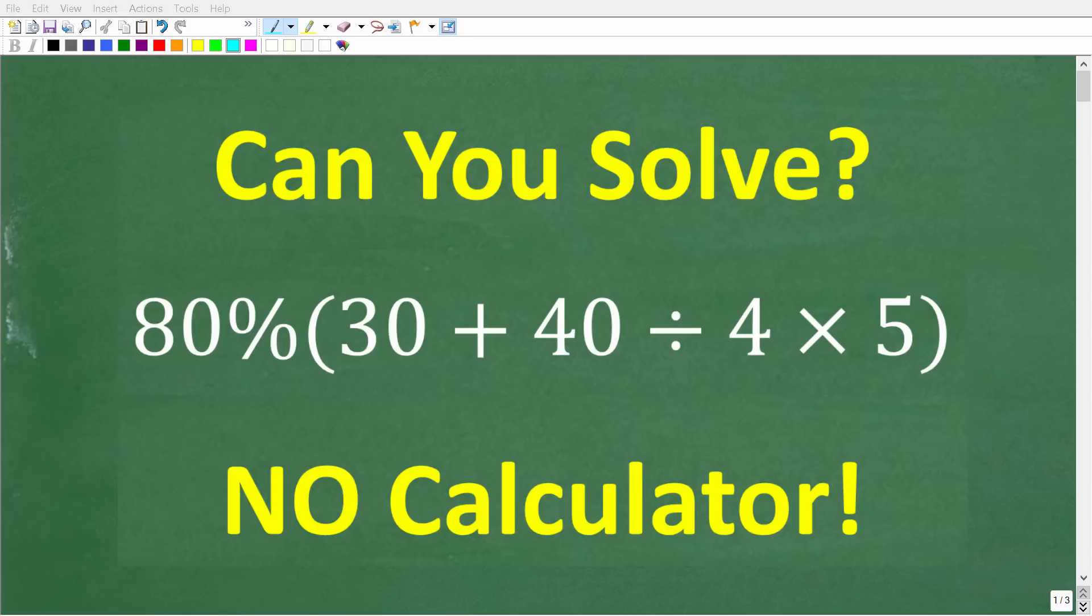Let's see if you remember enough basic math to solve this problem without using a calculator. Here is the question: We have 80% of 30 plus 40 divided by 4 times 5, all of this in parentheses. So once again, no calculators, but if you think you know the answer, put that into the comment section.